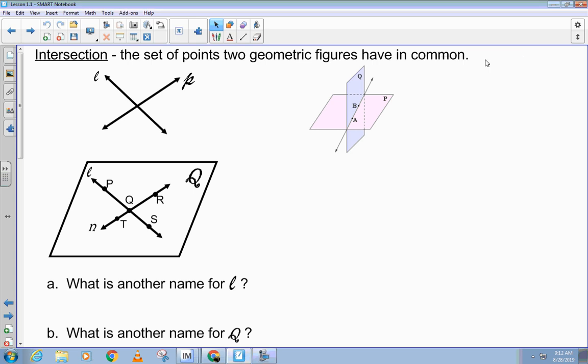Okay, so yesterday we got through the undefined terms of geometry: the point, the line, and the plane - how to name them, how to talk about them, what they look like. Then we went on to talk about the line segment, the ray, the angle, what it means to be collinear and non-collinear, and coplanar and non-coplanar. We covered that yesterday.